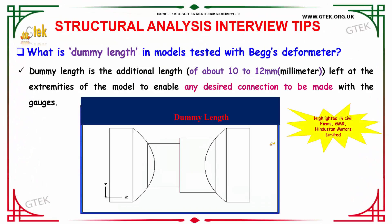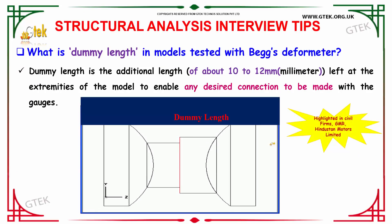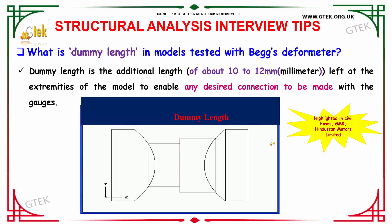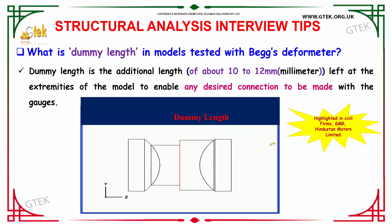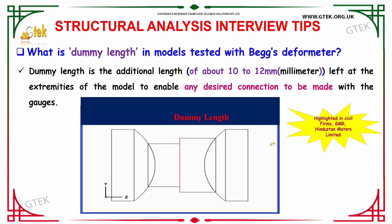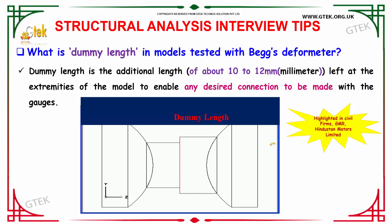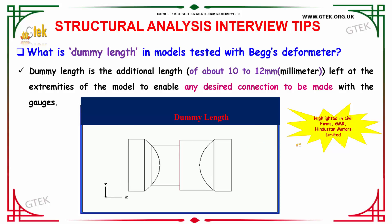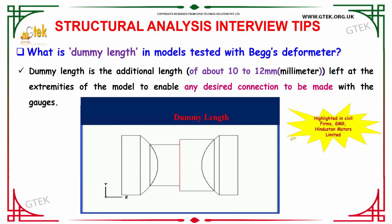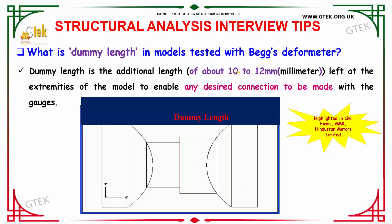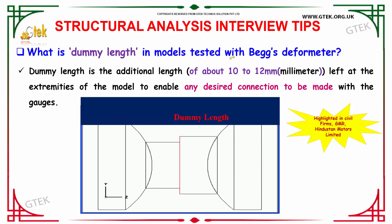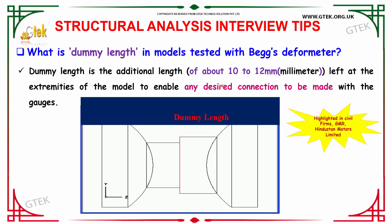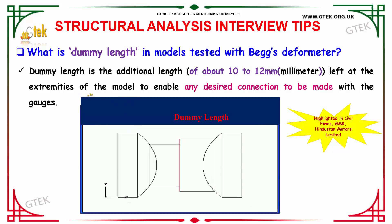The next question is: what is dummy length in model tests with the Beggs Deformeter? Dummy length is the additional length of about 10 to 12 mm left at the extremities of the model.